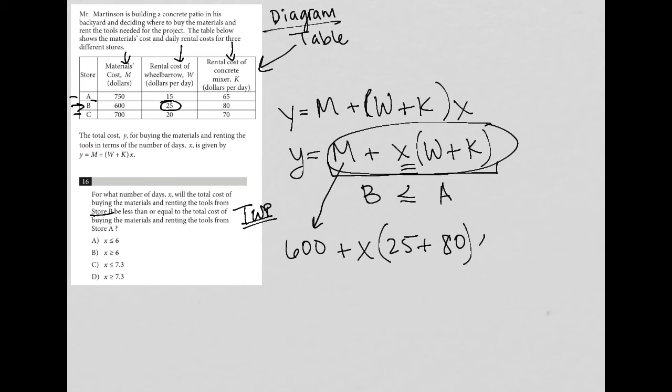But we want this to be less than or equal to this cost for store A. So store A, store A's M is 750, and then again, plus X and parentheses, 15 plus 65. So 15 plus 65. So here is our translation. This is exactly what the question told us. B less than or equal to A.